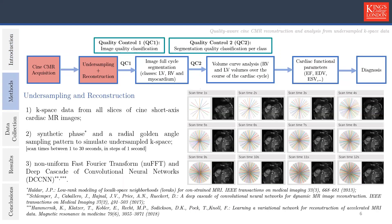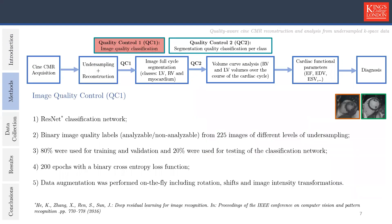We simulated an active acquisition process by creating k-space data from all slices of CINE images, and generated a synthetic phase and a radial golden angle sampling pattern to simulate undersampled k-space data. This data contains increasing numbers of profiles corresponding to scan times between 1 to 30 seconds in steps of 1 second. We then compare two reconstruction algorithms: the non-uniform fast Fourier transform (NUFFT) and a deep cascade of convolutional neural networks (DCCNN).